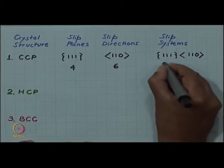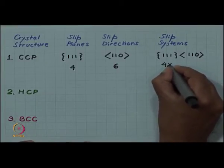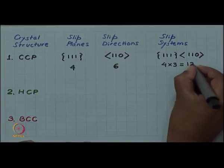For 4 plane, we have 12 directions. So 4 into 3, 12 slip systems are there.